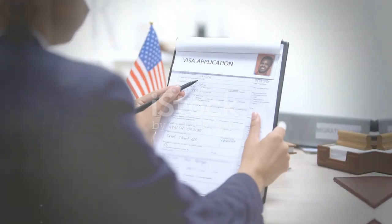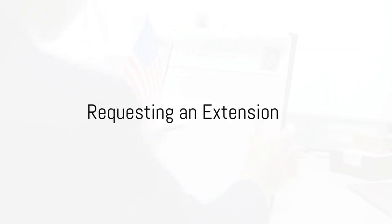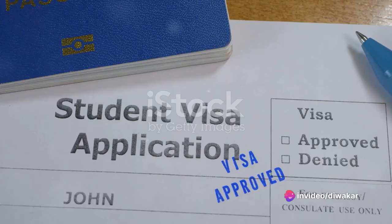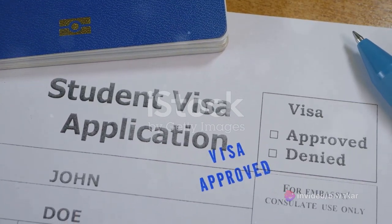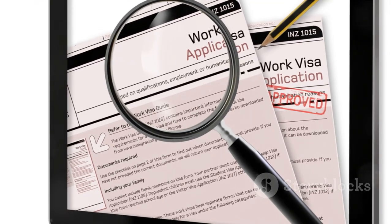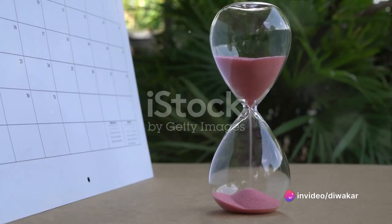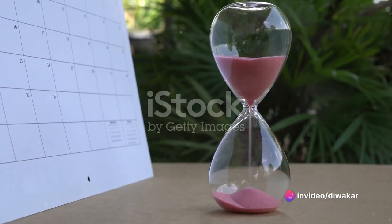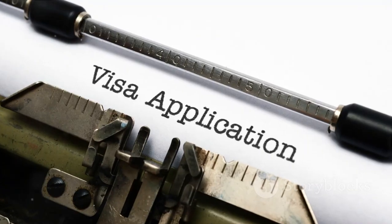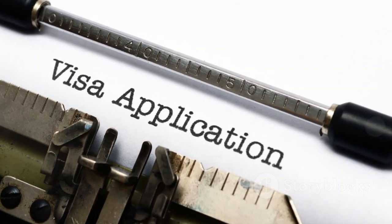Before your Form I-94 expires, you can take certain steps if you realize you aren't able to leave the United States by that date. All you must do is contact the USCIS — U.S. Citizenship and Immigration Services — to request an extension, providing a valid reason. It can take some time to obtain approval, so you must act right away. If Form I-94 has already expired, you need the services of an experienced immigration lawyer immediately. The quicker you act, the better your chances of remaining in the country, as the regulations concerning overstaying a visa can be extremely complicated.